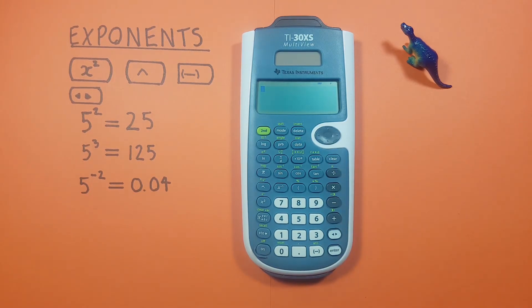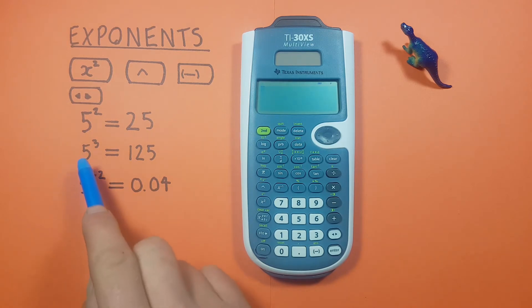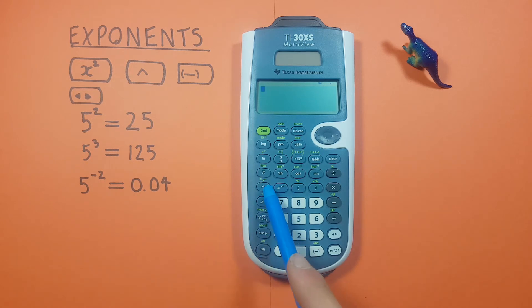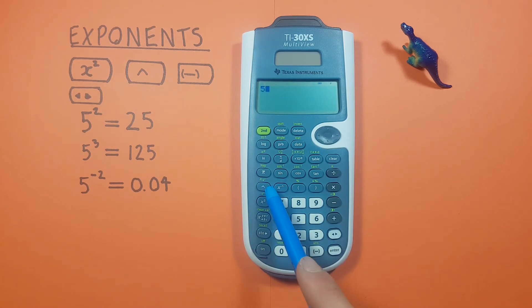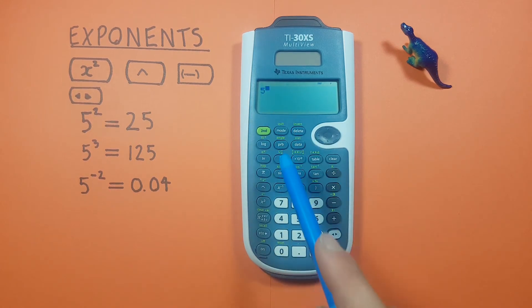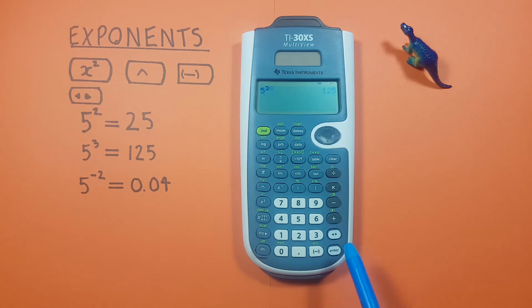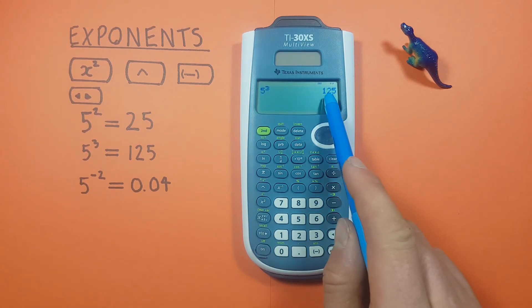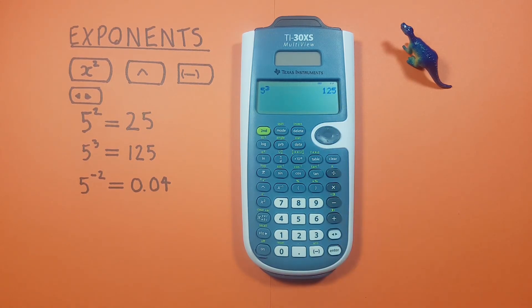What if we want an exponent that isn't a square, like say 5 cubed? To do that we use the caret key. We start with the base of 5, hit the caret key, and our cursor moves up into the top right exponent position. Then we enter our exponent which is 3, press enter, and get a result of 125, which is correct.